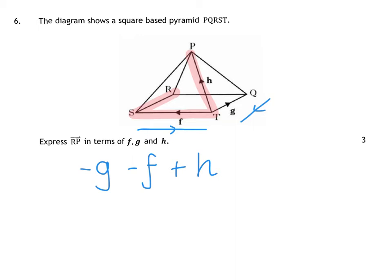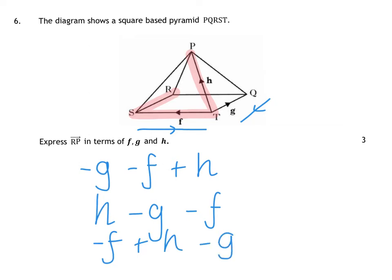You can have the three of them in any order. So you could have had H minus G minus F, or minus F plus H minus G, as long as there's a negative with the F and the G. Any combination of those three with H being positive, depending on what path you followed, would dictate your order.